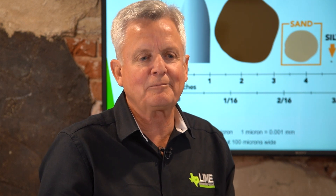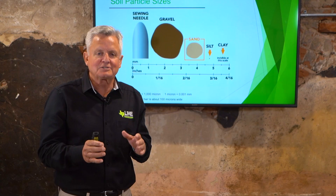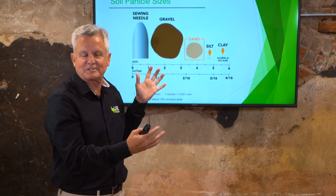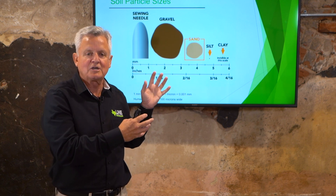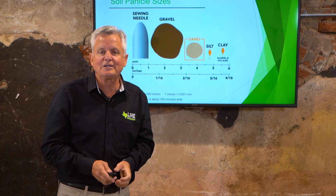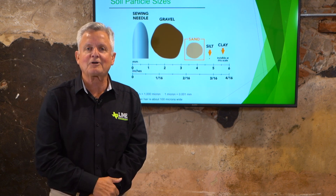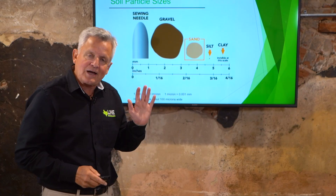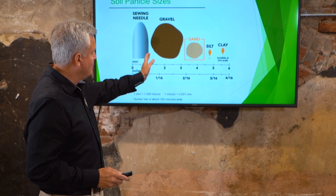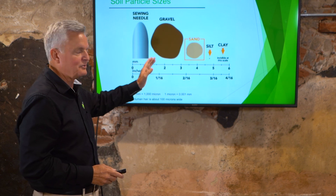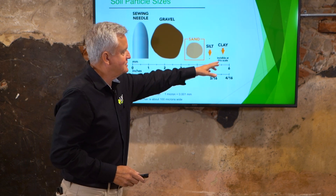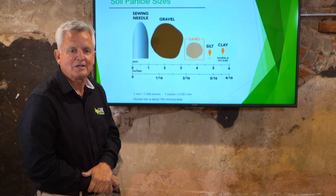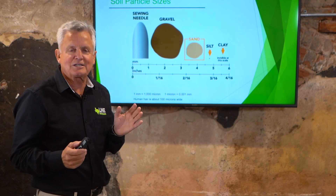Once sand gets up to about two millimeters it's considered gravel, which starts at about two millimeters and can go up as high as about two and a half inches. When talking about clay, I'll introduce the measurement of a micron, because clay is about one micron. There are a thousand microns in one millimeter, so it would take a thousand particles of clay just to cross that sewing needle.